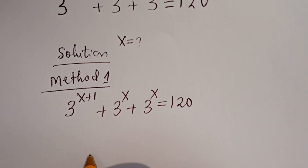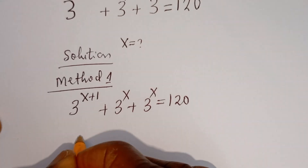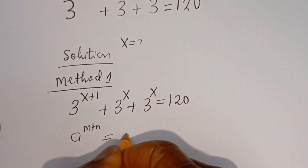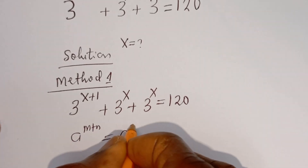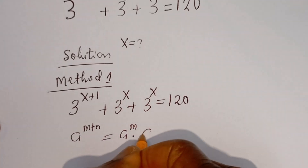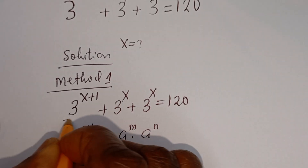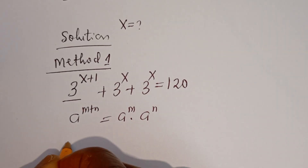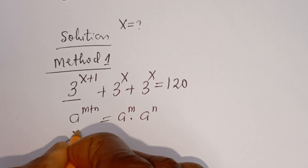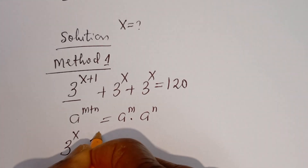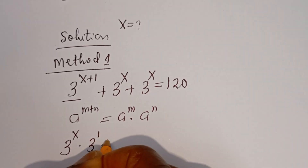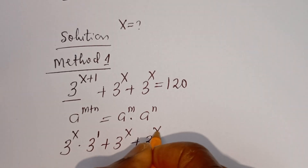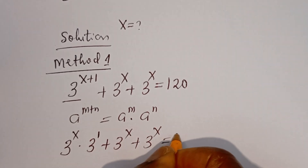Take note that if you have A to the power of M plus N, this is equal to A to the power of M multiplied by A to the power of N. Then this can be written as 3 to the power of S multiplied by 3 to the power of 1, plus 3 to the power of S, plus 3 to the power of S is equal to 120.